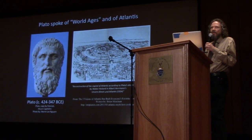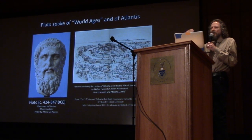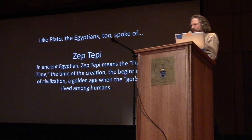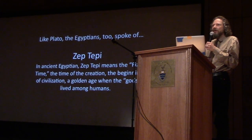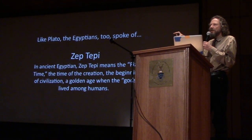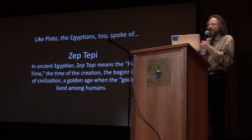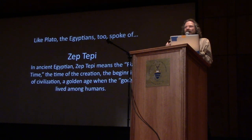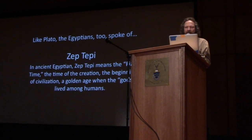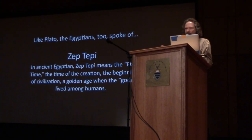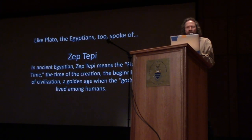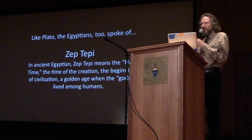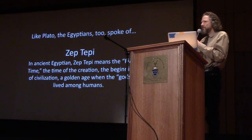Not only do we have Atlantis, we have things like the Yuga Cycle — the concept of gold, silver, bronze, iron ages. And in Egypt, the very ancient dynastic Egyptians had the concept of Zep Tepi. You can think of Zep Tepi as a golden age far back in the remote past — a time when the gods were with humanity, an early cycle of civilization, the first time, a golden age when the gods lived among humans. The concept of Atlantis, according to Plato, actually comes from Egypt, passed down through his ancestor.